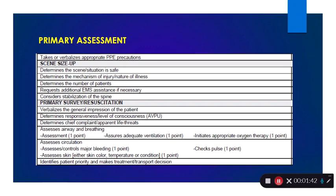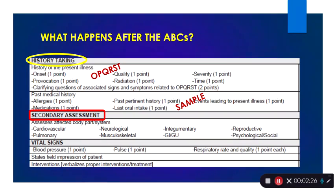C-spine is going to take a whole other set of equipment — it's going to take somebody dedicated to manually stabilizing that C-spine. Remember, we are not putting a C-collar on right here. Now we're going to go into that primary survey, which in and of itself is the ABCs. My general impression as I walk up to the patient: I want to know is my patient alert and what is their chief complaint. Then I'm going to look at the airway, assess if it's adequate, breathing adequate, and is my circulation adequate. This video is about what happens after the ABCs.